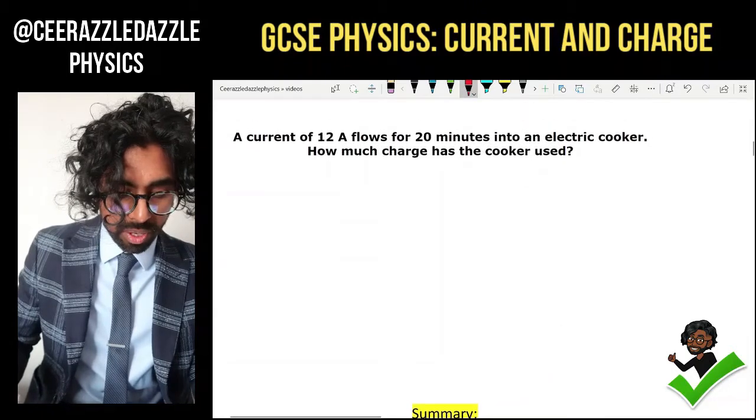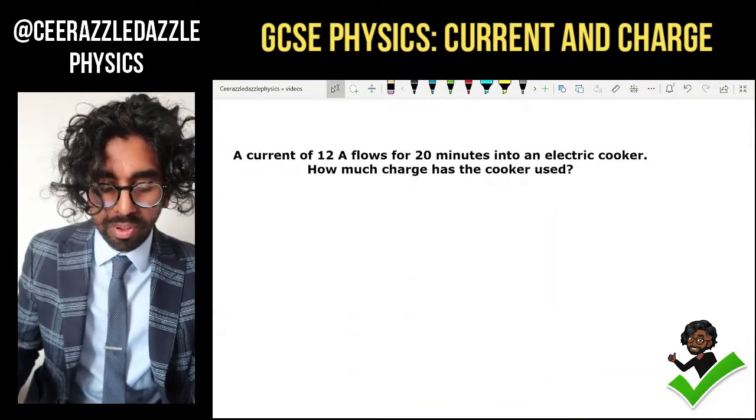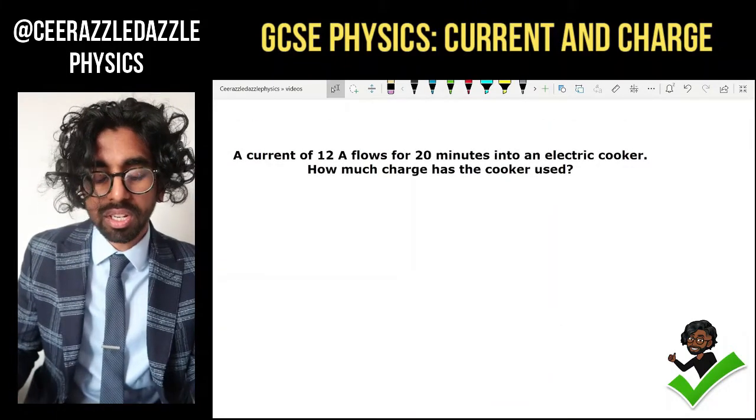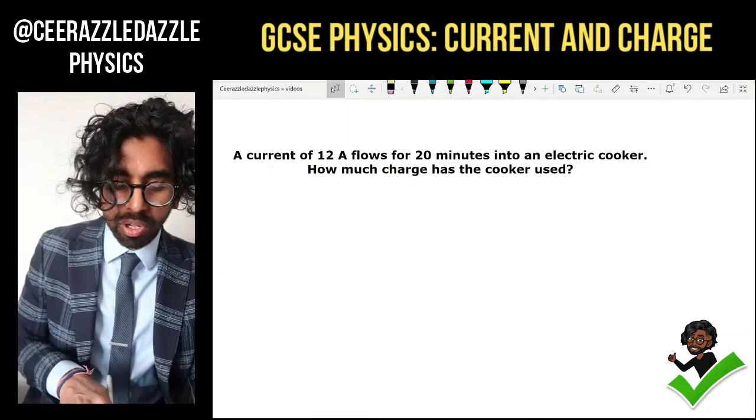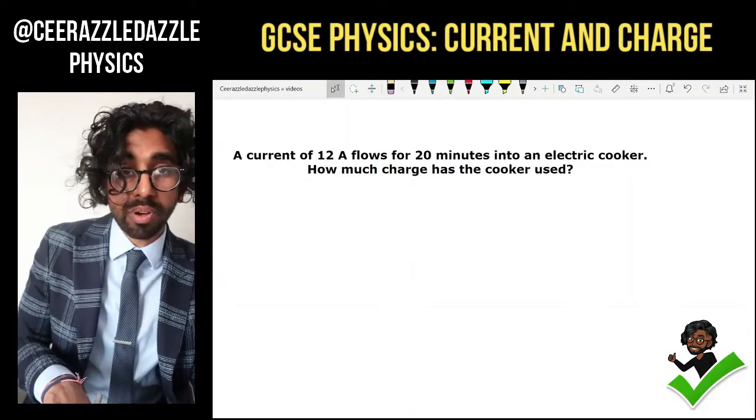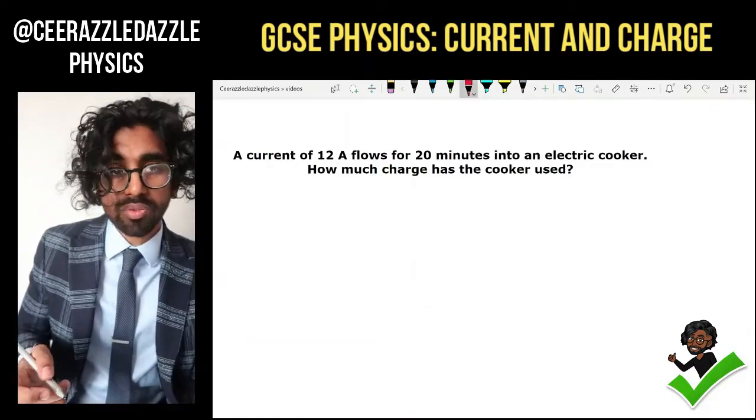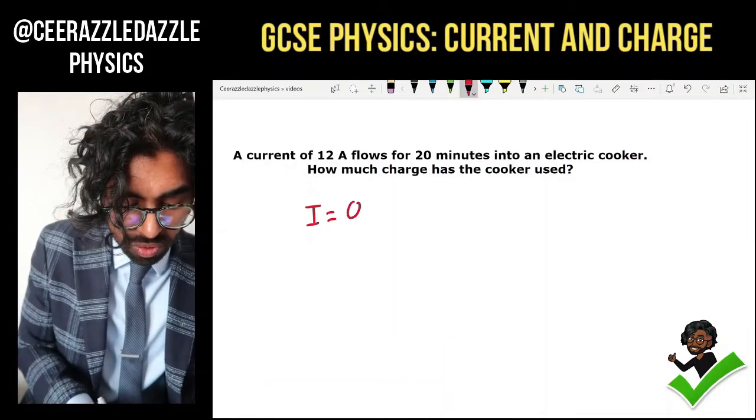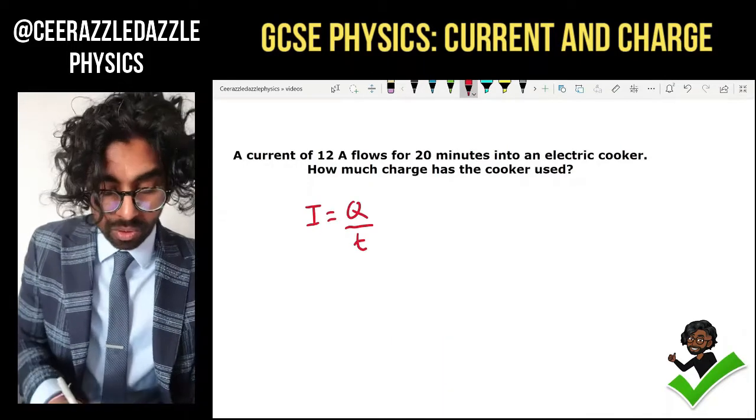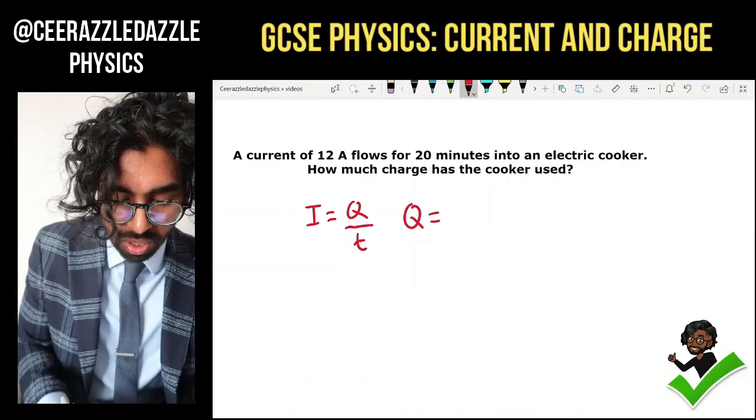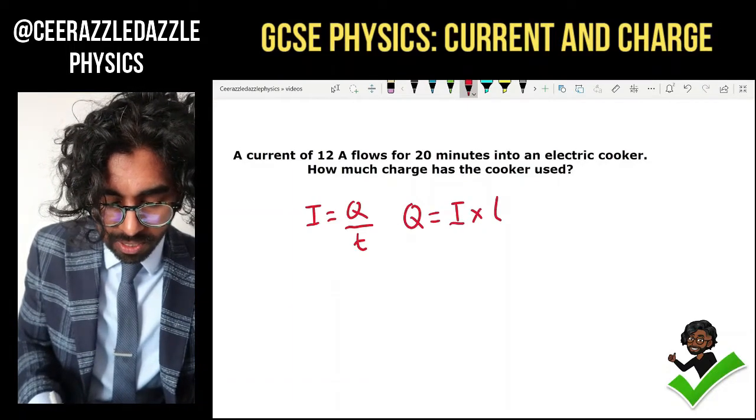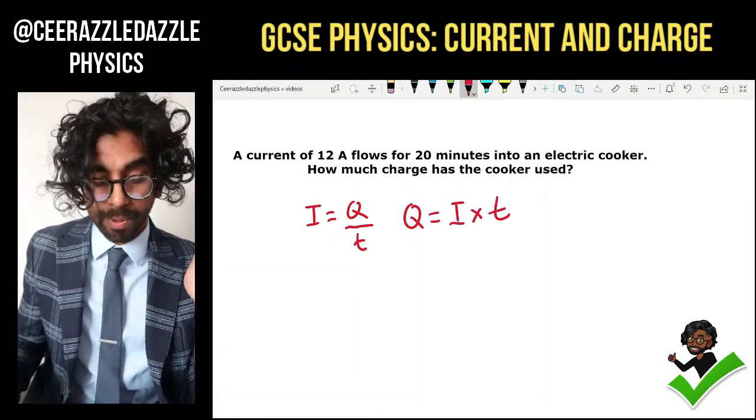Now we have the following question. A current of 12 amps flows for 20 minutes into an electrical cooker. How much charge has the cooker used? So we're trying to find out the charge this time. Always write down the formula. I is equal to Q divided by t. Now Q is equal to I multiplied by t. Okay with that.